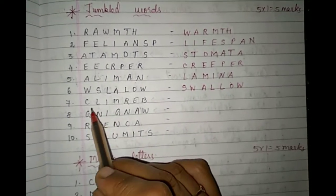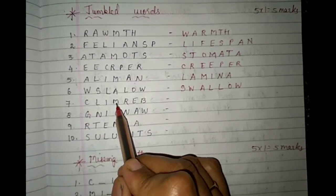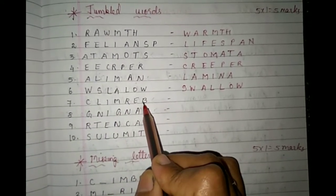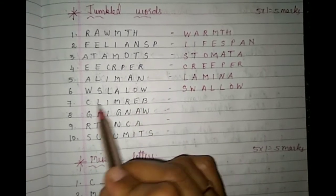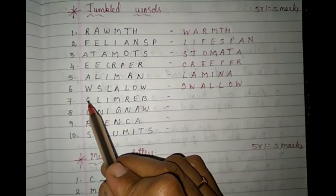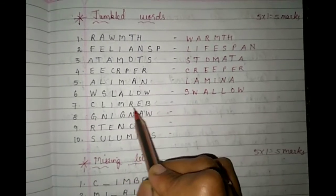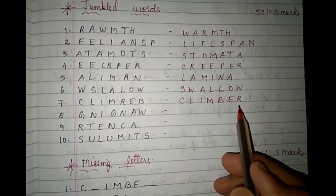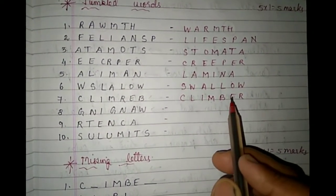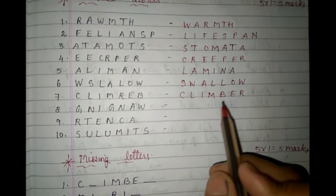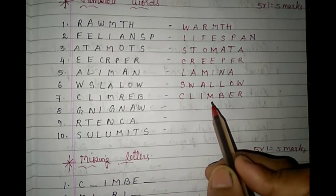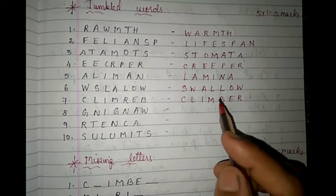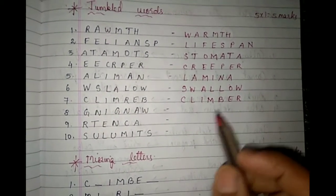Seventh one: C-L-I-M-R-E-B. This is very easy. From the starting you can already tell — C-L-I-M — and only B-E-R is reversed. Which word is this? Climber. What are climbers? These are plants with very weak stems. Example of a climber? Grapes and peas.